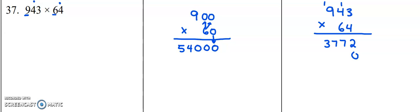For our second row, we're going to place a 0 to hold the 1s place. Go right to the 6. 6 times 3 is 18, carrying that 1. 6 times 4 is 24, plus 1 is 25.